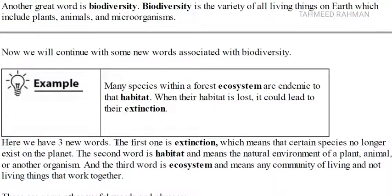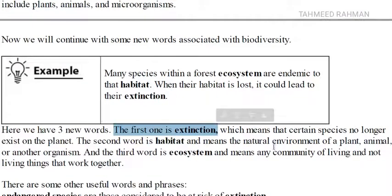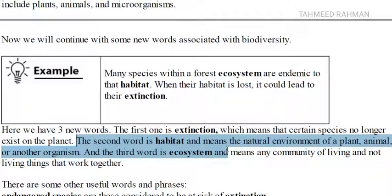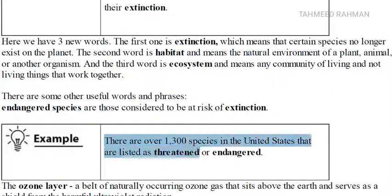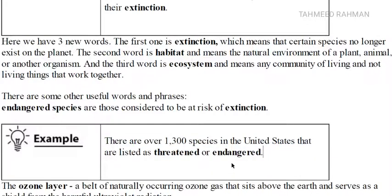Here are three new words. The first is extinction, which means certain species no longer exist on the planet. The second is habitat, which means the natural environment of a plant, animal or another organism. The third is ecosystem, which means any community of living and non-living things that work together. Another useful phrase is endangered species — those which are considered to be at risk of extinction. For example, there are over 1,300 species in the United States listed as threatened or endangered.